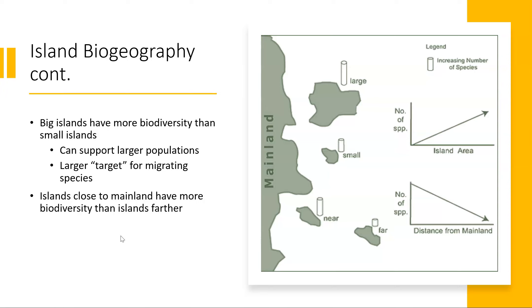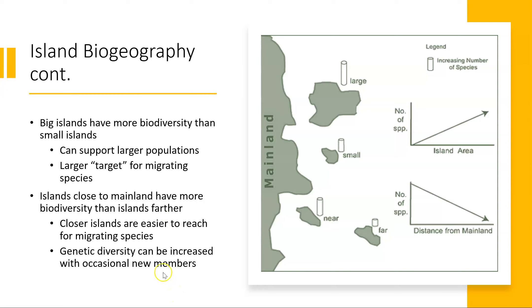Second, islands close to the mainland have more biodiversity than islands farther away — this is called the distance effect. Closer islands are easier to reach for migrating species, so there's an increased amount of migration to those islands. They're also more resilient because genetic diversity can be increased with more frequent new members joining that population.